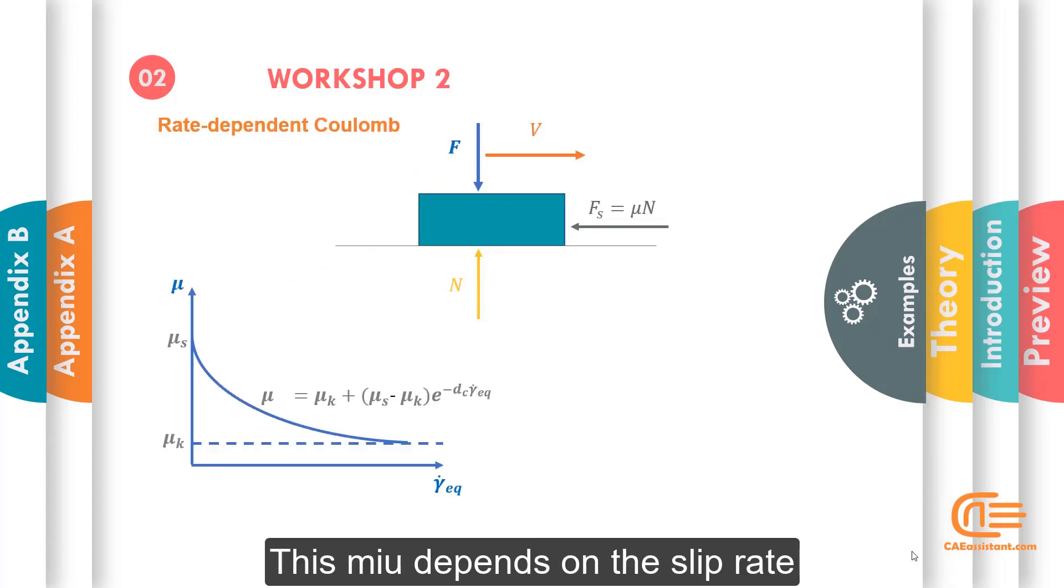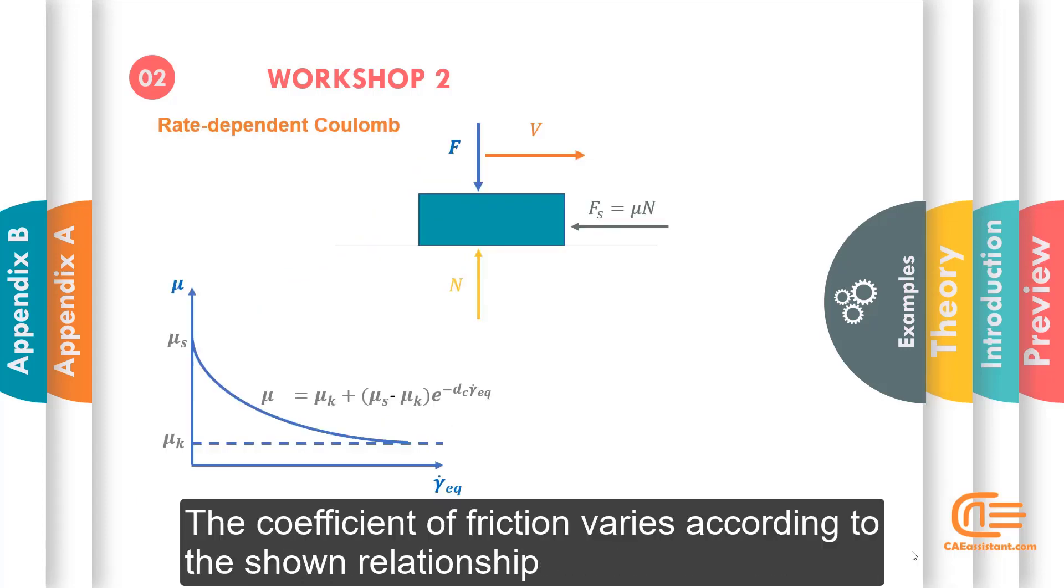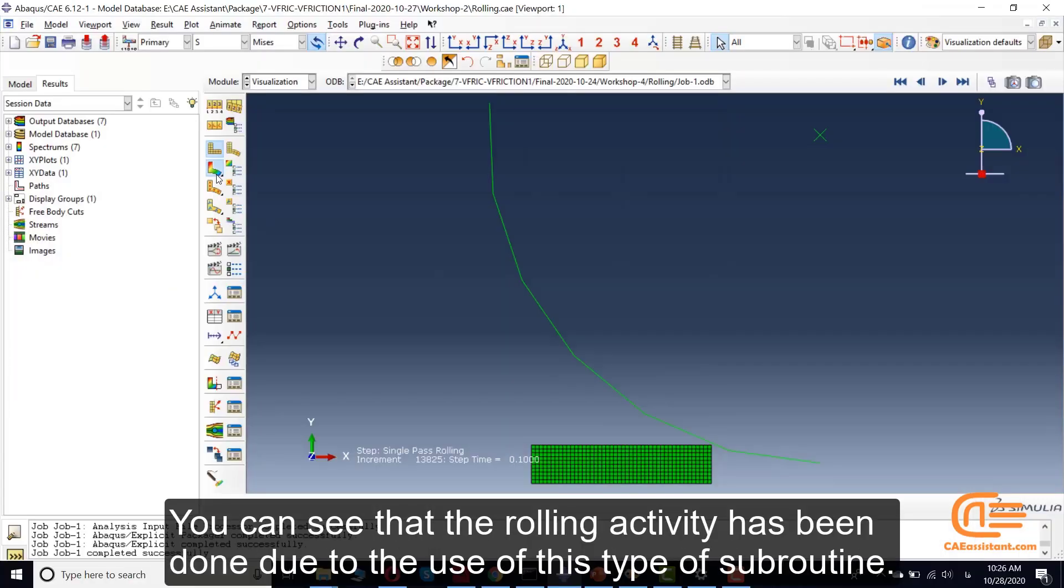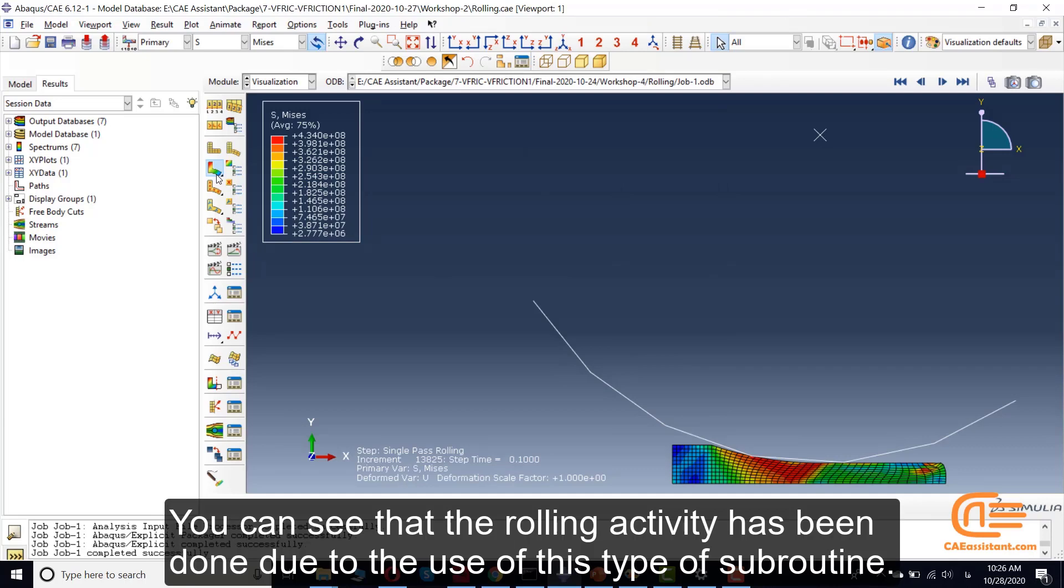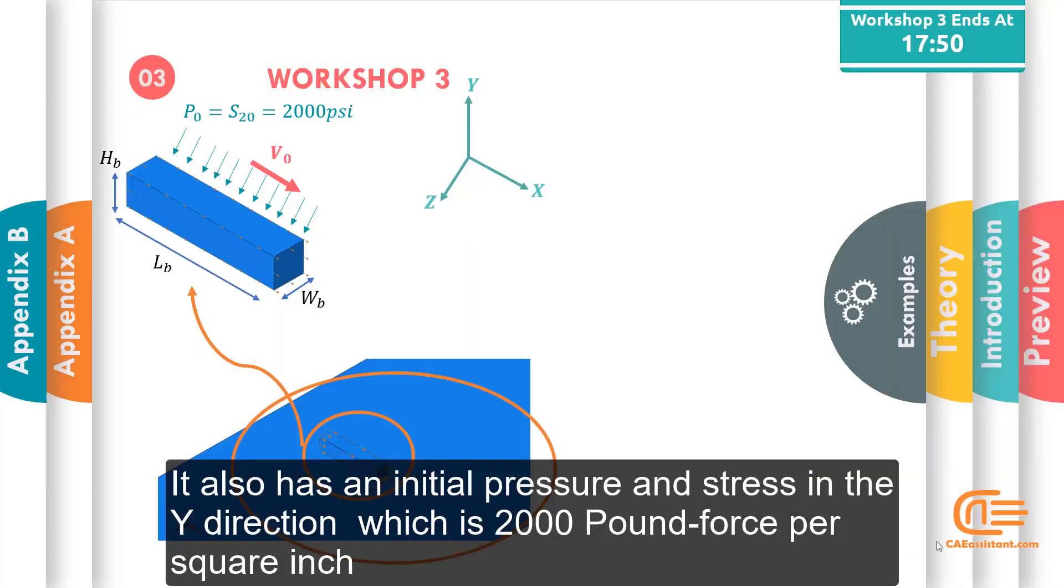In this case, the coefficient of friction varies according to the shown relationship. This has been done due to the use of this type of subroutine. It also has an initial pressure and stress in the width direction, which is 2,000 pound force per square inch.